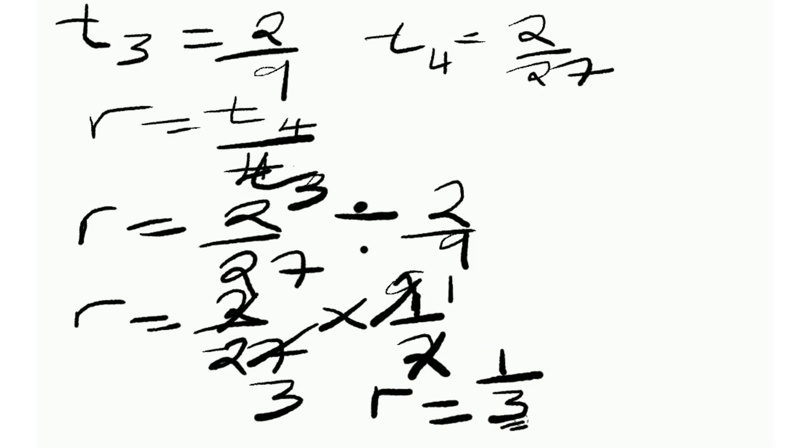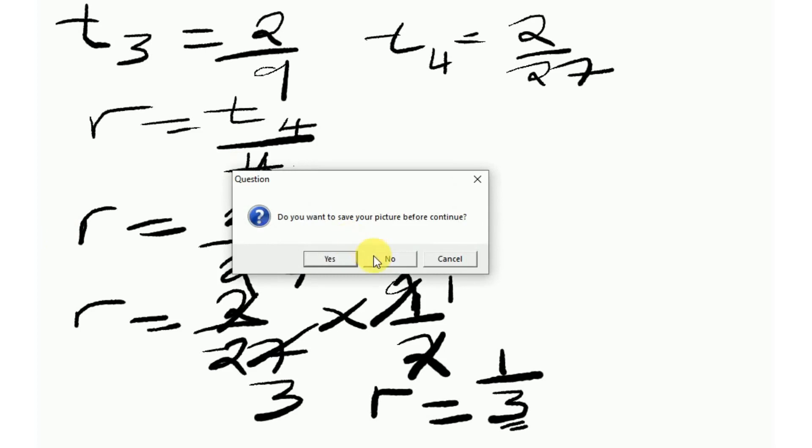Then I need to find the first term. I know the formula for geometric progression is a_n equals a times r to the power of n minus 1. So I'll use the third term.